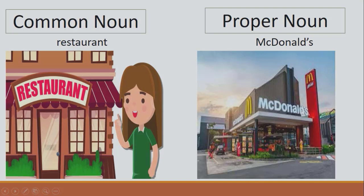There are so many restaurants in a city, so 'restaurant' is a common noun. But when we specifically talk about one restaurant, we give it a special name written with a capital letter — like McDonald's. The 'M' in McDonald's is capital because it is a proper noun, the name of one specific restaurant. Whereas 'restaurant' is written with a small letter because it is not a special name and there are so many restaurants.